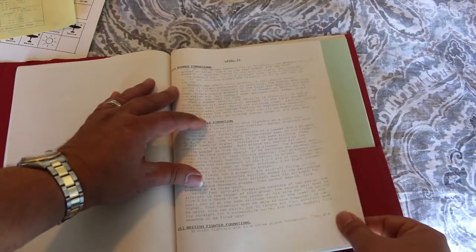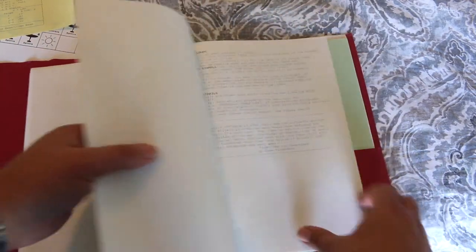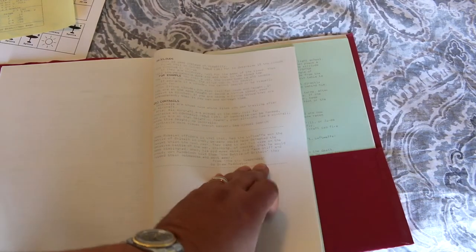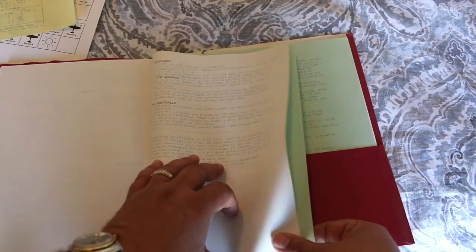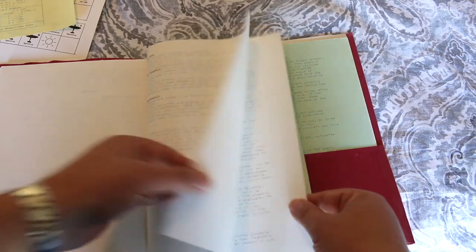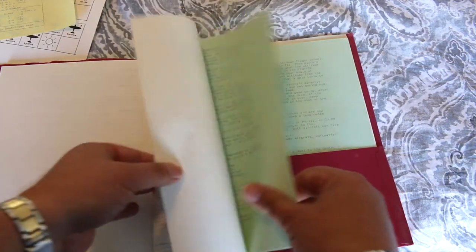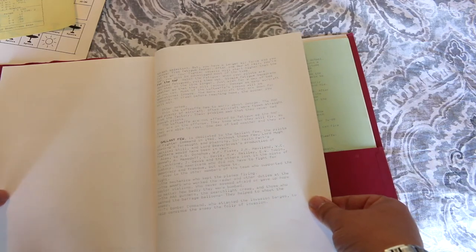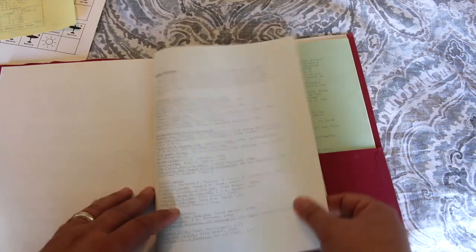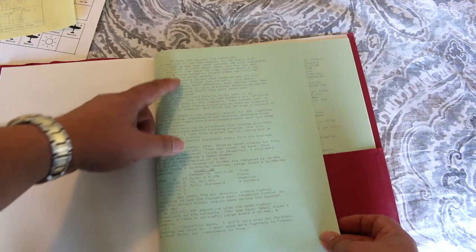Then going over bomber formations, German fighter formations, British fighter formations, pilot abilities, high G turns. Contrails are even included in this. Interesting. Going over effects of clouds on visibility and so forth.